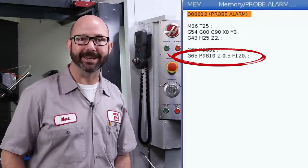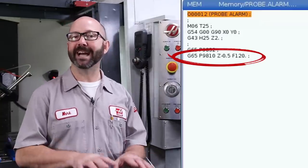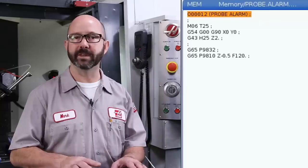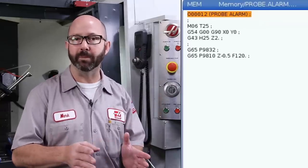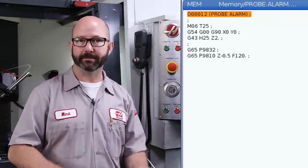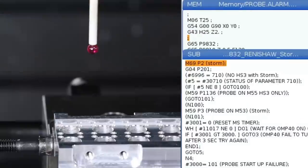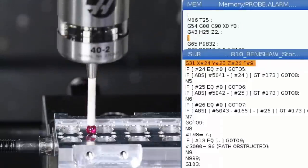Now this brings us to our G65P9810 protected positioning move. This allows us to move our probe safely from point to point. Normally, if the probe makes contact while the P9810 sub is active, the machine will stop and the control is going to give us a 1086 path obstructed alarm. Now this is a good alarm. This is typically why we use a 9810.